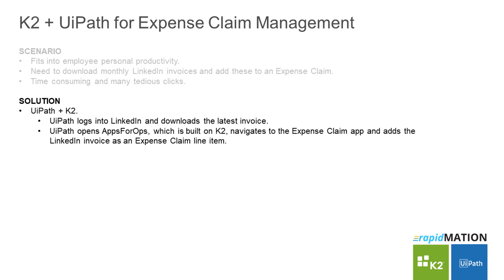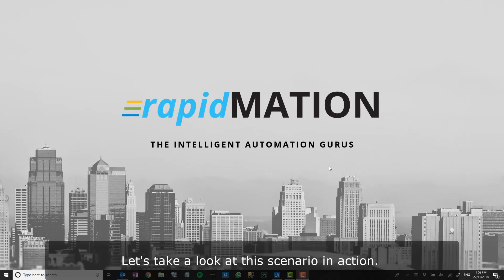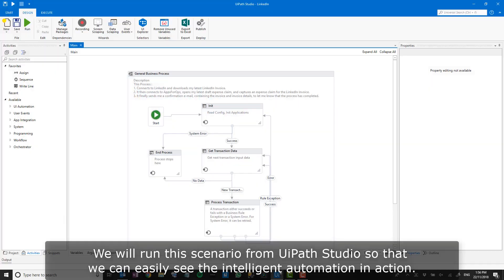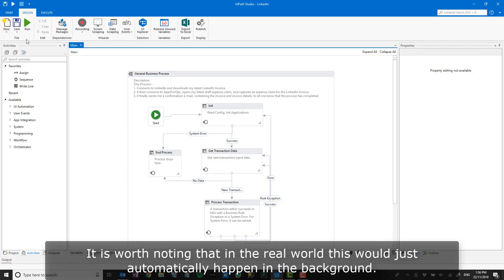The solution was to combine K2 and UiPath. We created a UiPath robot that automatically logged into LinkedIn on the employee's behalf and downloaded the latest invoice, adding it to the employee's expense claim. We will run this scenario from UiPath Studio so we can easily see the intelligent automation in action — in the real world this would just automatically happen in the background.